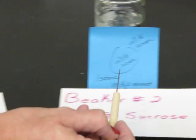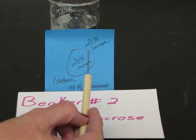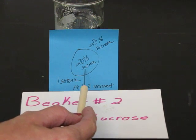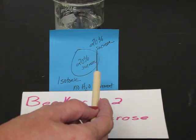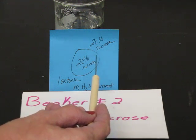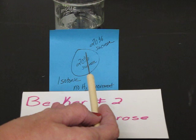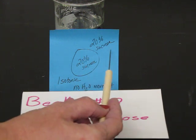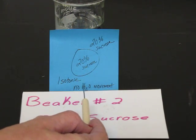If we go to beaker 2, we have a 20 percent sucrose solution in our bag or cell, and it is sitting in a 20 percent sucrose solution. This is called an isotonic solution because it is the same, or iso, inside the bag and outside the bag. You will have no water movement.